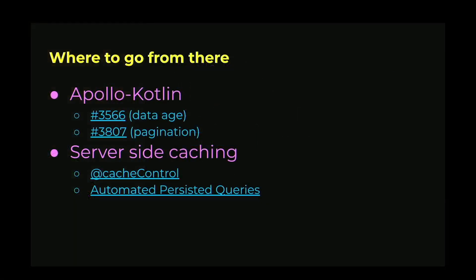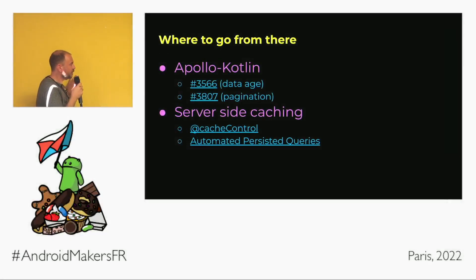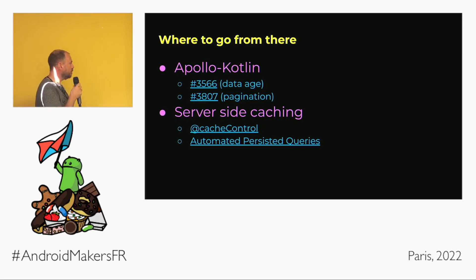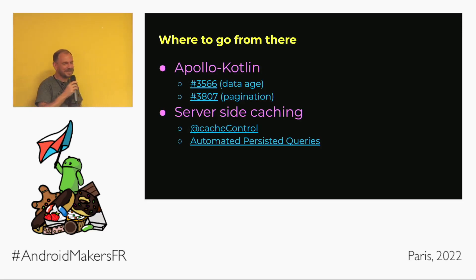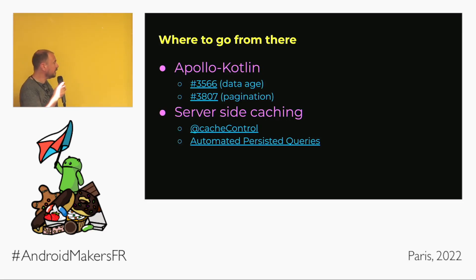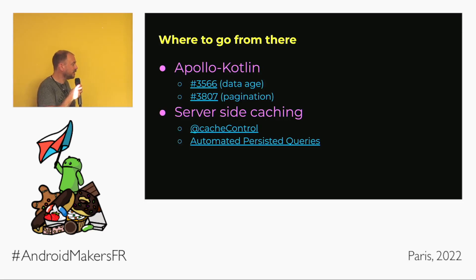For going further, there are two issues listed that concern the normalized cache — don't hesitate to check them out as we're currently in the design phase. They cover things like expiring data in the cache and pagination. Also, caching is not just for the client — for server-side GraphQL caching, there are specific keywords worth searching for.